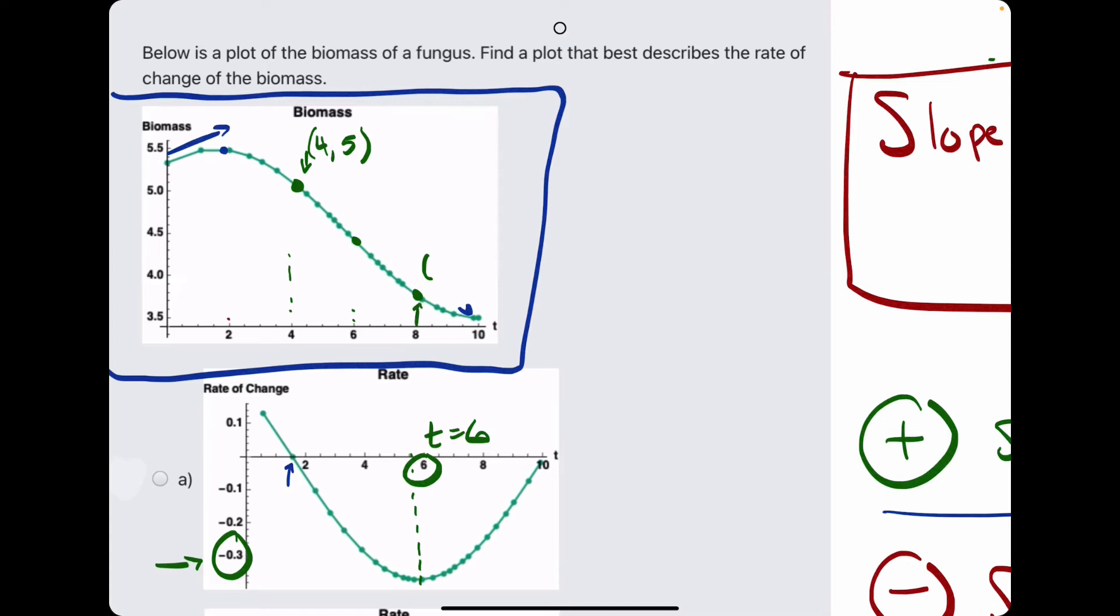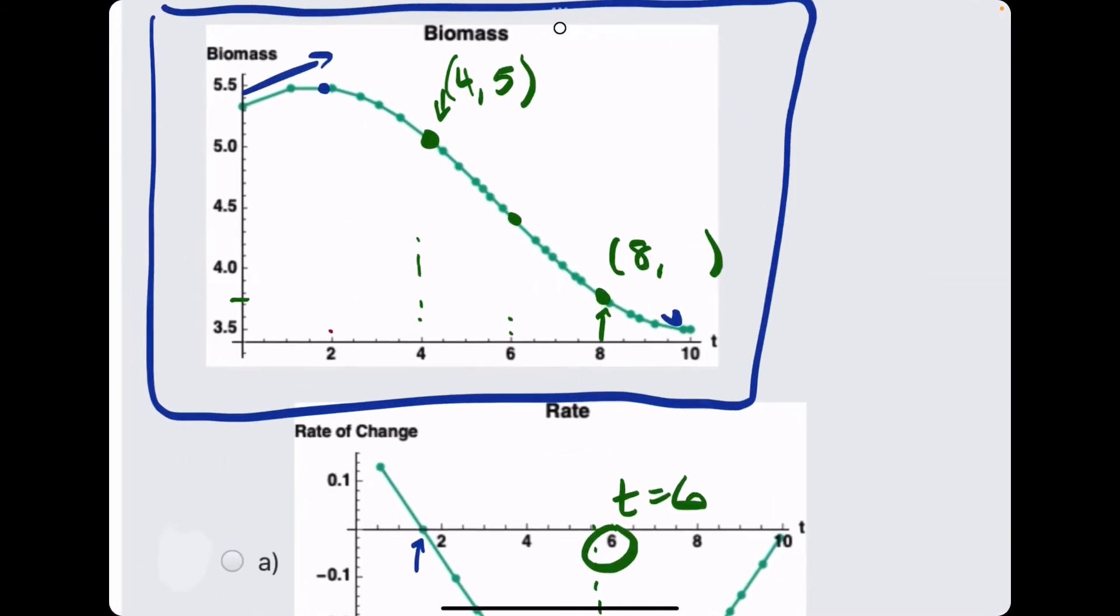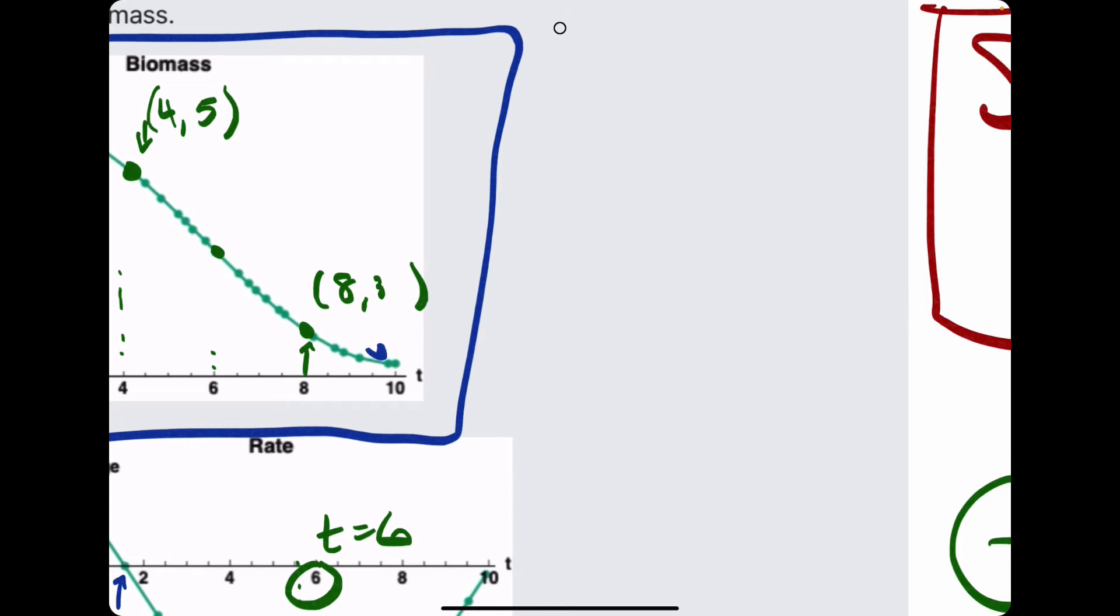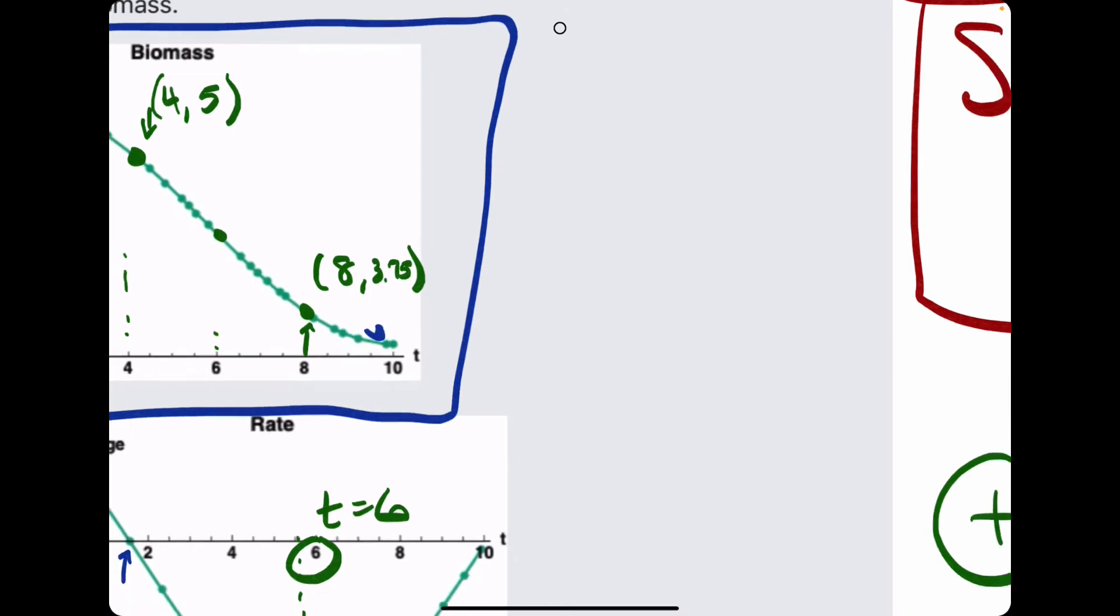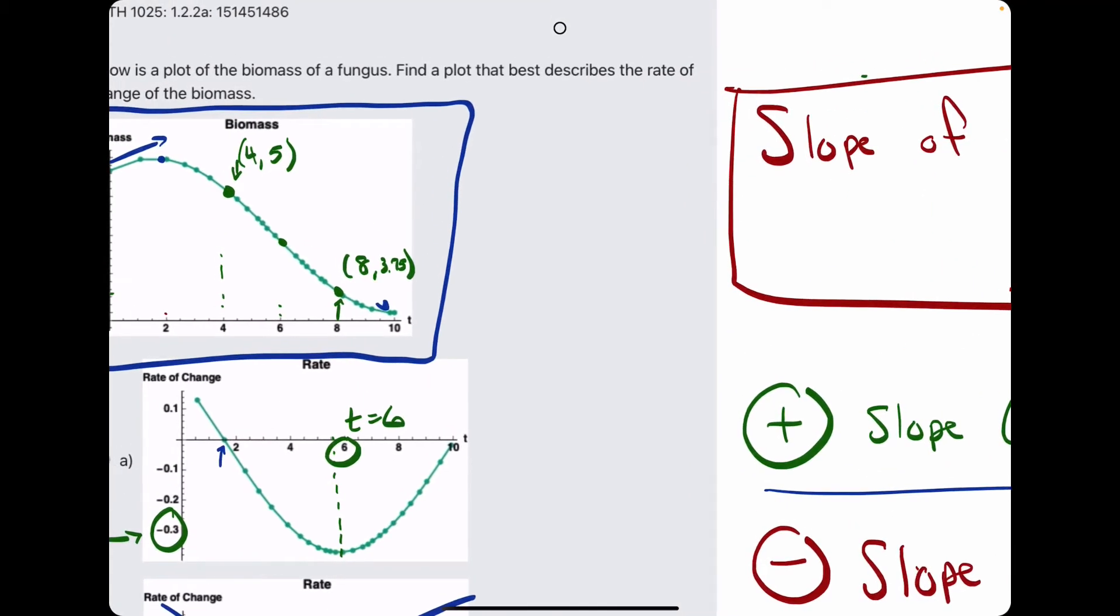we can identify this ordered pair to be 8, comma, it's a little trickier, sort of in between 3.5 and 4, so maybe, let's call it 3.75. If we can find the slope between these two points, it'll be a great estimate for the slope right in the middle at 6.